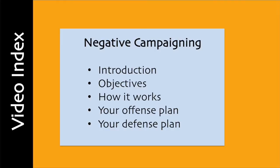In this video, our objective is to understand the process of negative campaigning. The video is divided into five parts. In the first part, the introduction, we will explain what negative campaigning is. In the second part, we'll look at what negative campaigning tries to accomplish. In the third part, we'll explain how negative campaigning affects the brain. In the fourth, this is your offense plan. And in the fifth, we will talk about your defense plan.